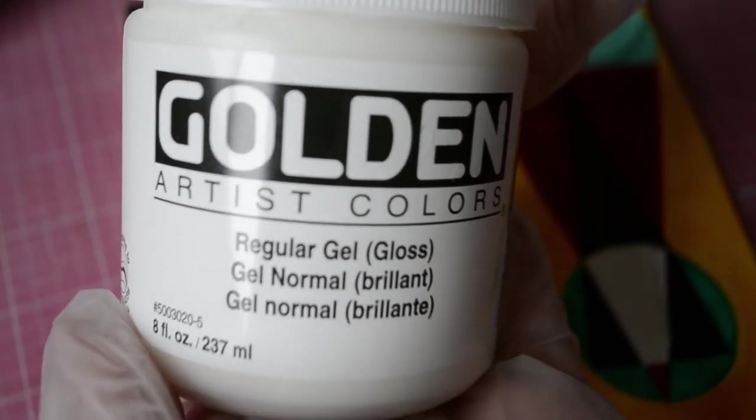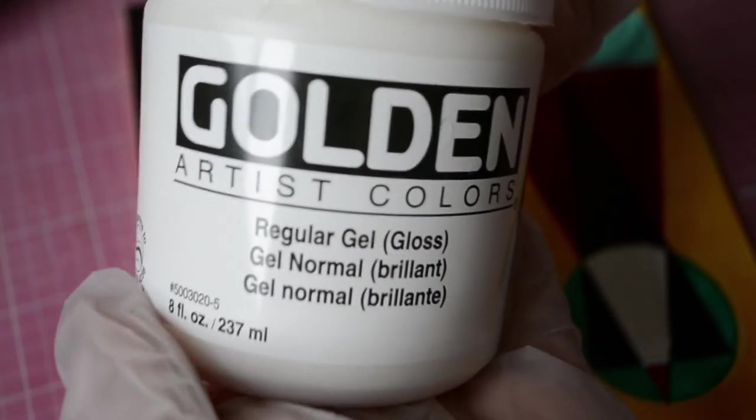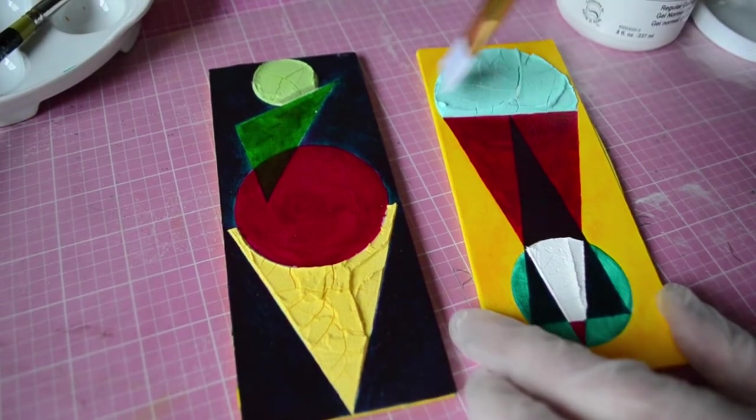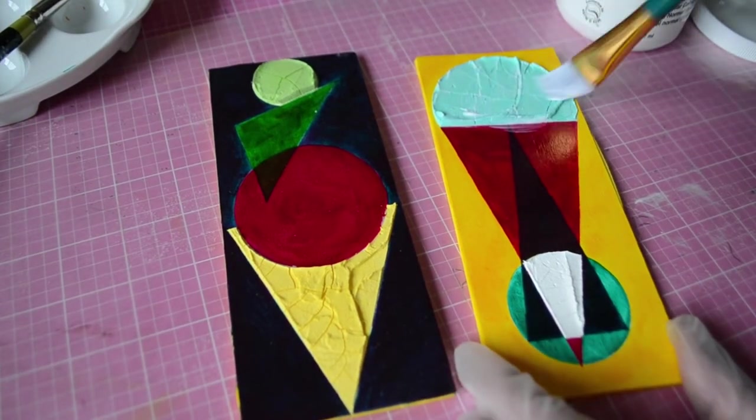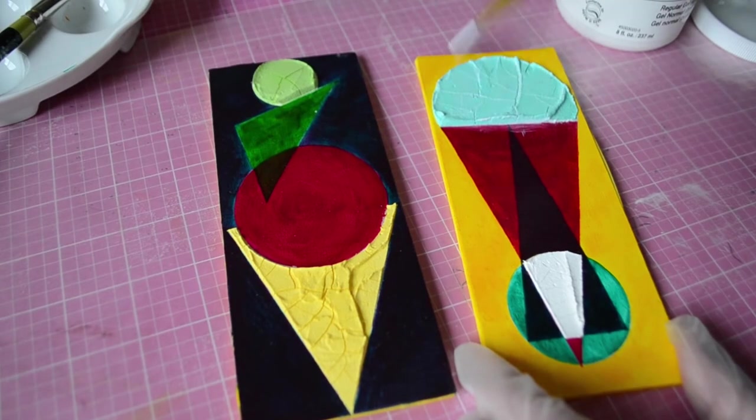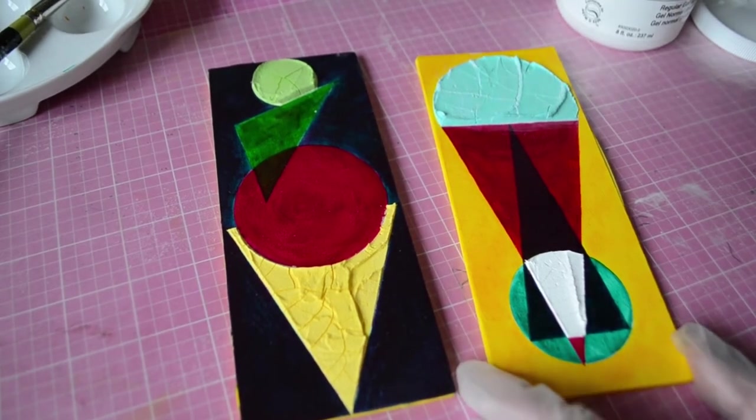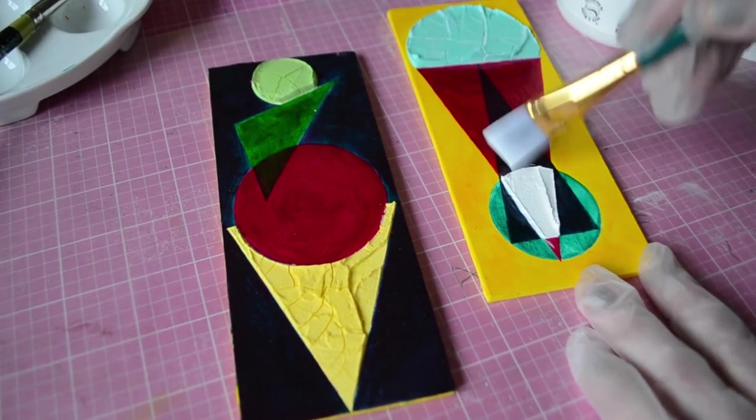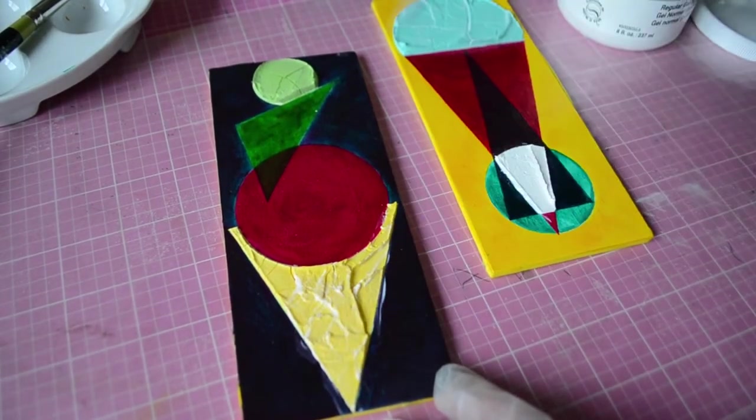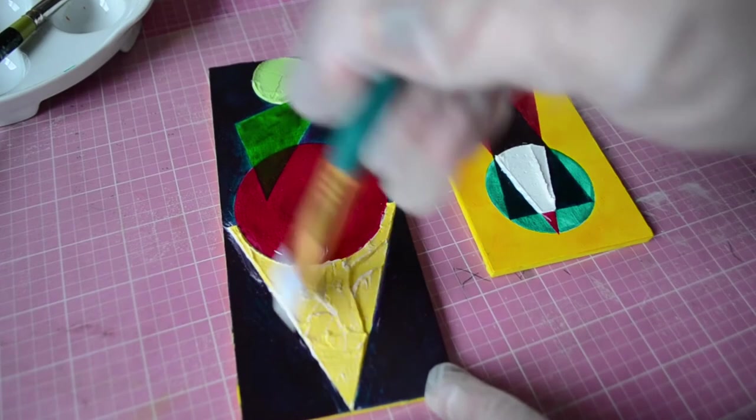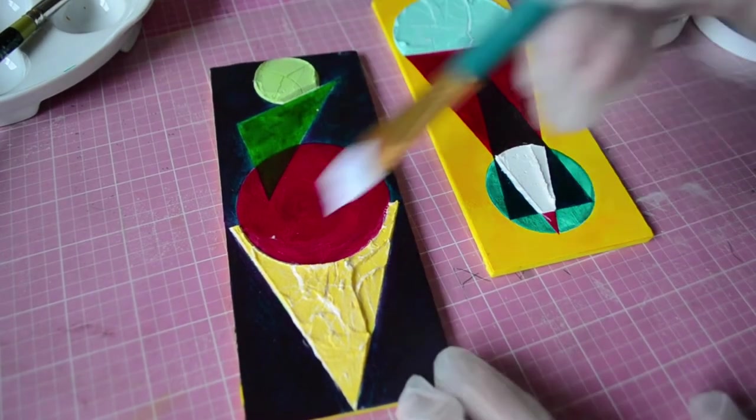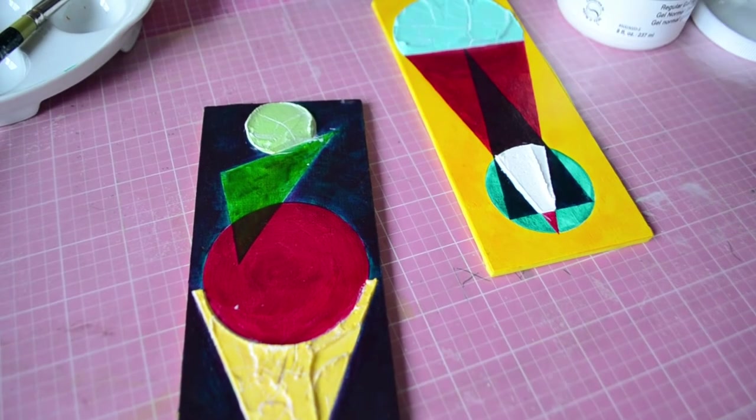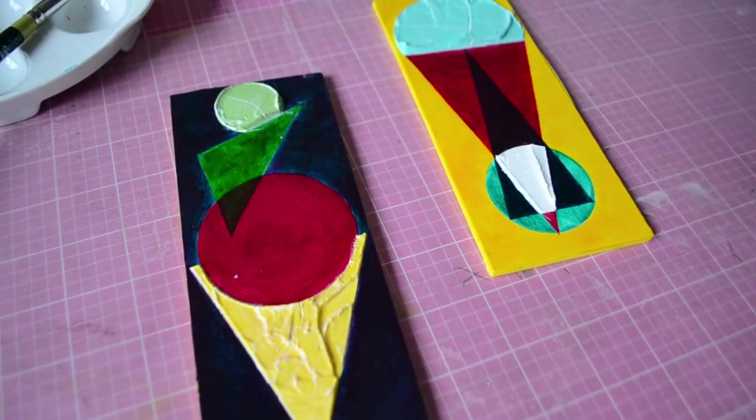Once it was all dried and the cracks were showing, I added a layer of gel medium over it. You could also add some clear gesso. This part is optional - I just feel that it's going to prevent it even further from chipping. But again, it's optional. You can just go ahead and paint over it.